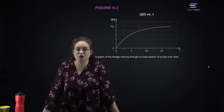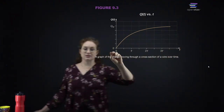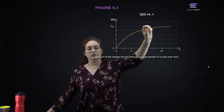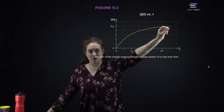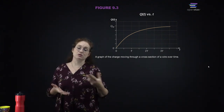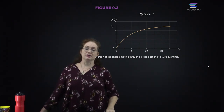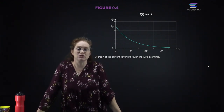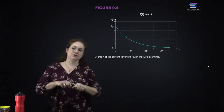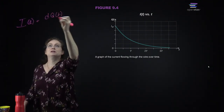Here you can look at charge as a function of time, with charge on the y-axis and time on the x-axis. The current is the time derivative of the amount of charge on something as a function of time. We use the symbol I to represent current, so I as a function of time is dq(t)/dt.